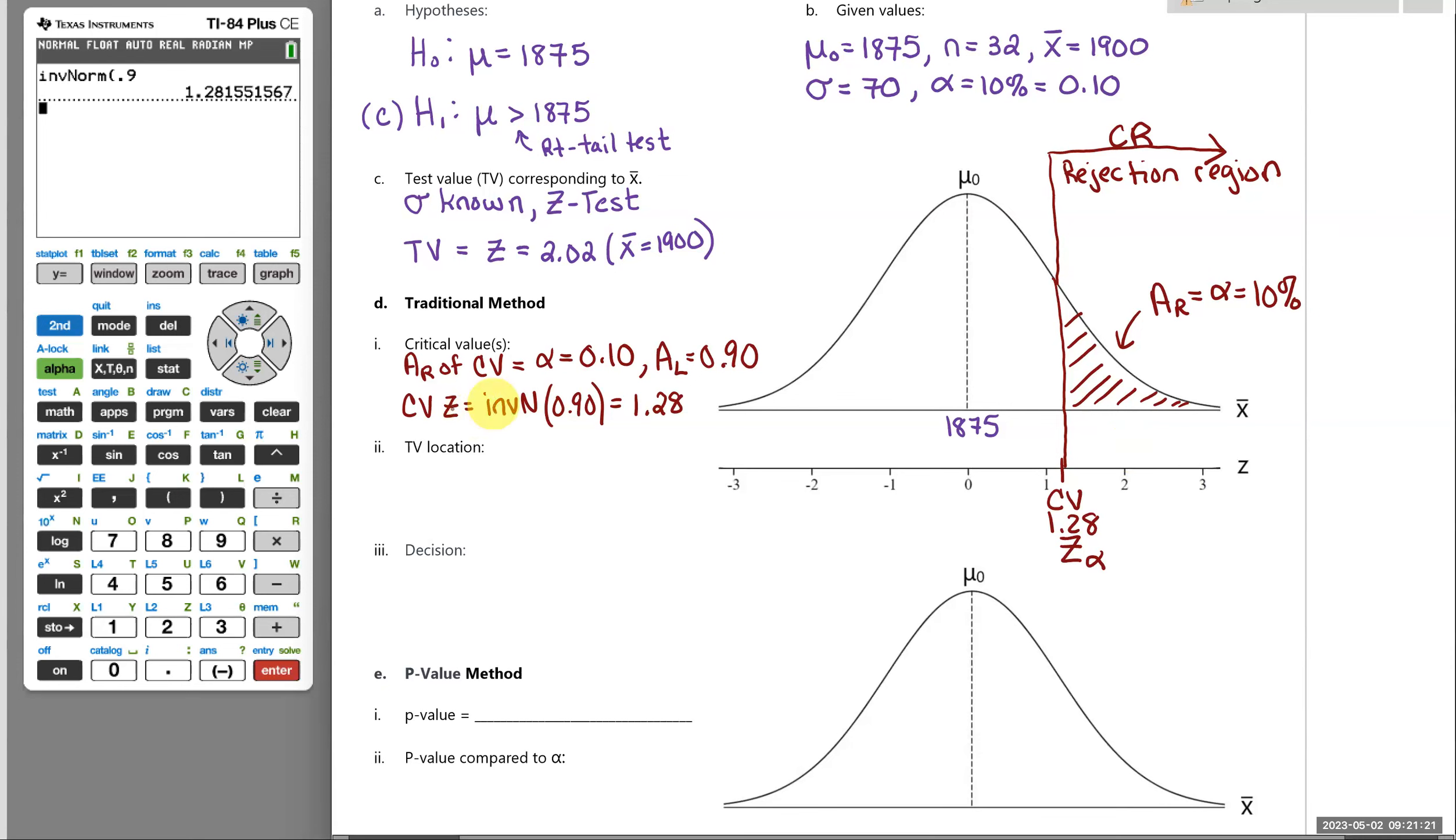All right. So the traditional method of hypothesis testing says, where is your test value located? So our test value was 2.02. So just past 2 there. So my test value, 2.02, tells me that my x bar of 1900 is indeed in the shaded critical region. So I often forget to label the non-critical region, because it, to me, is obvious. The critical region is shaded. So not critical is unshaded, but I'm going to label it here, not critical.